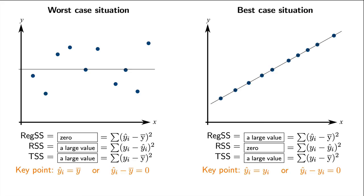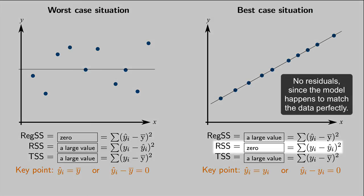And in this case here on the right, the residual distances observed minus predicted, or yi minus y-hat i, will be zero in every single case. There are no residuals. So this sum of squares is equal to zero.